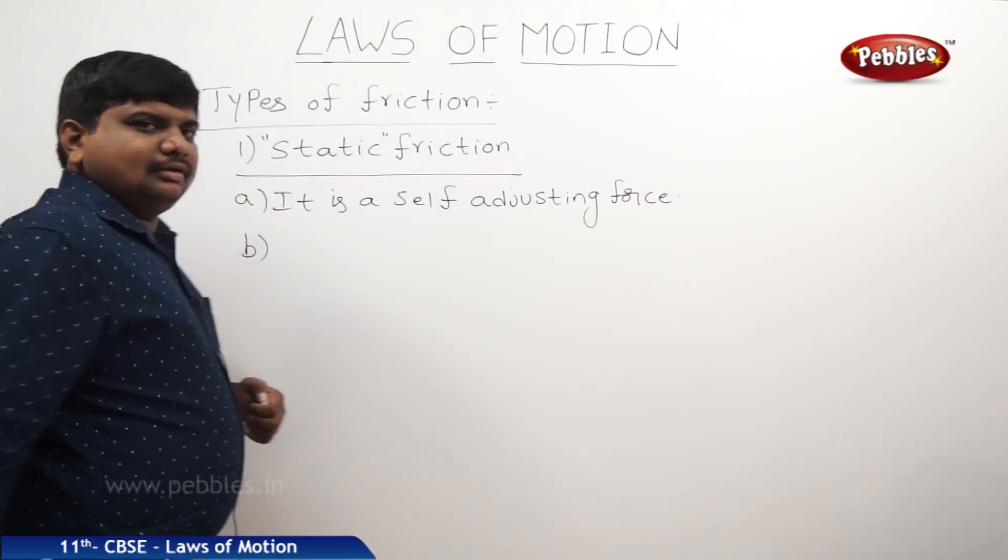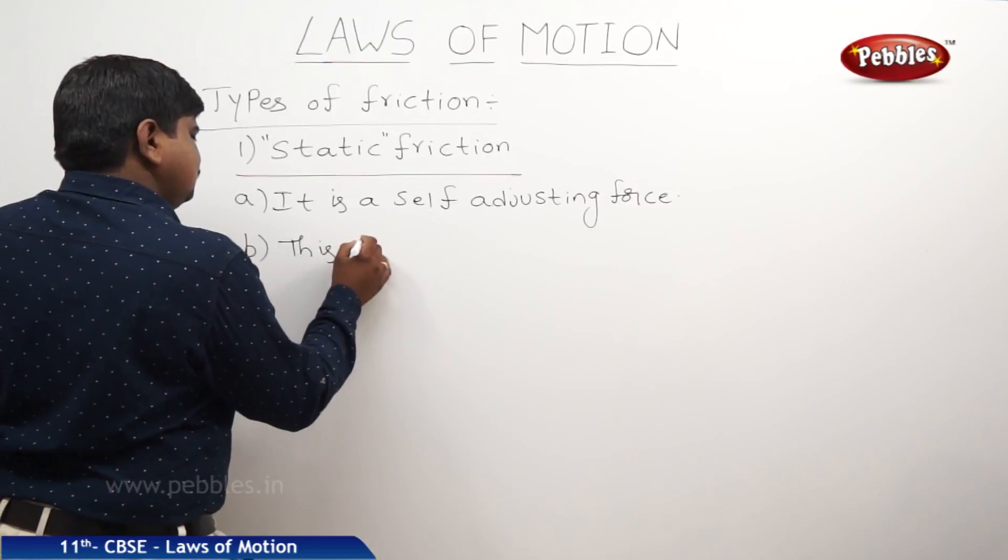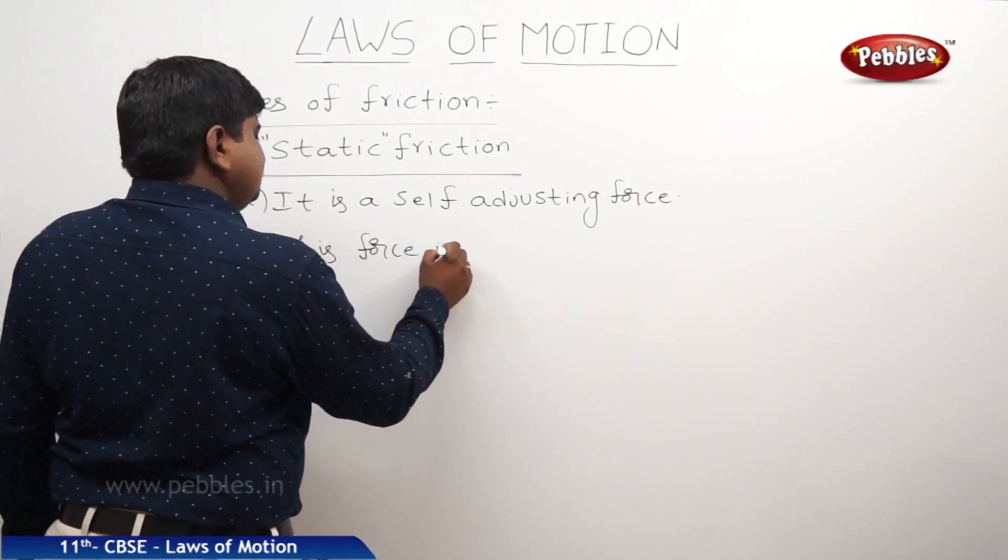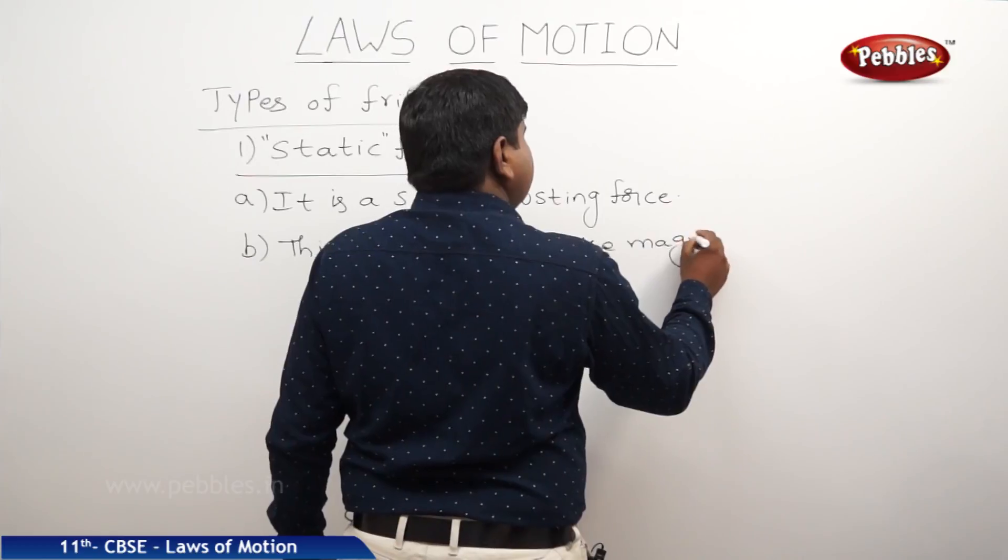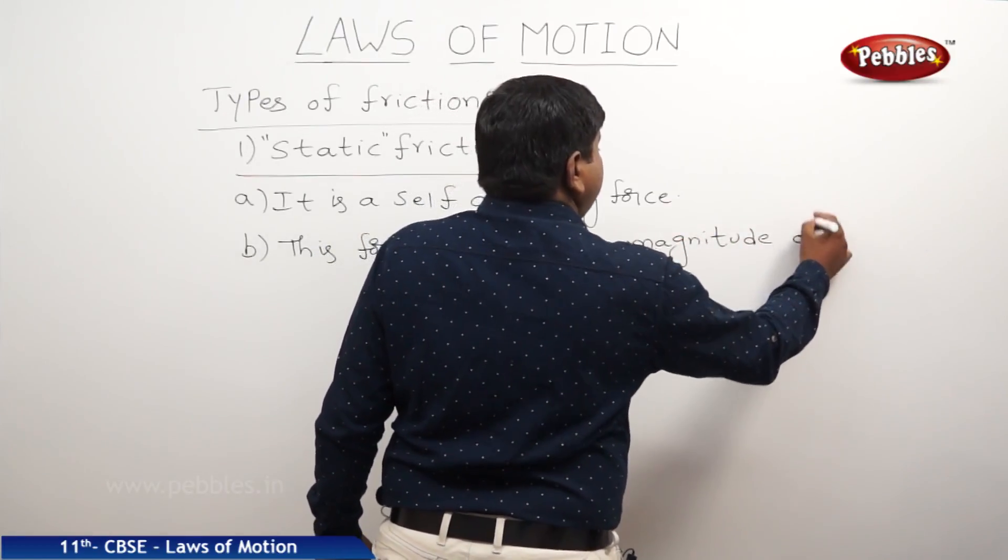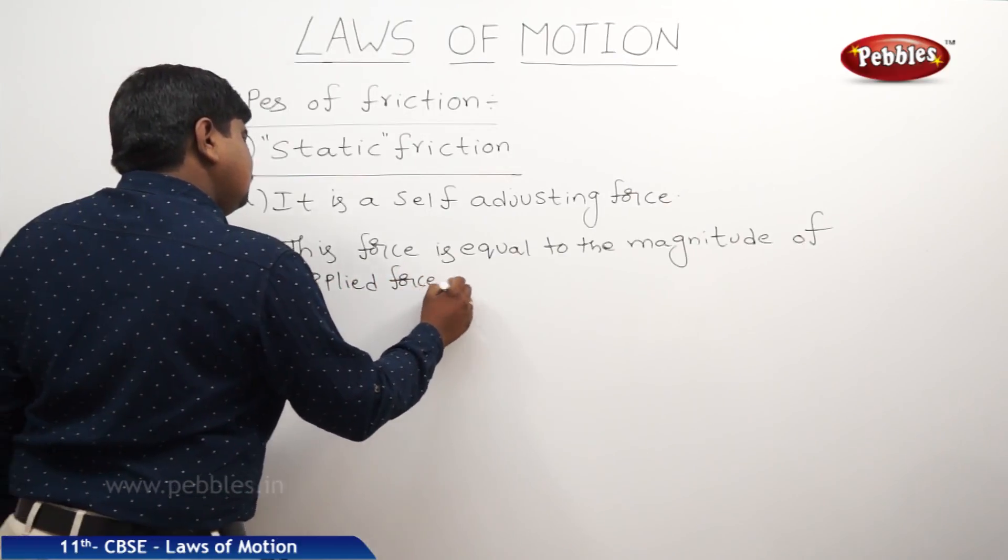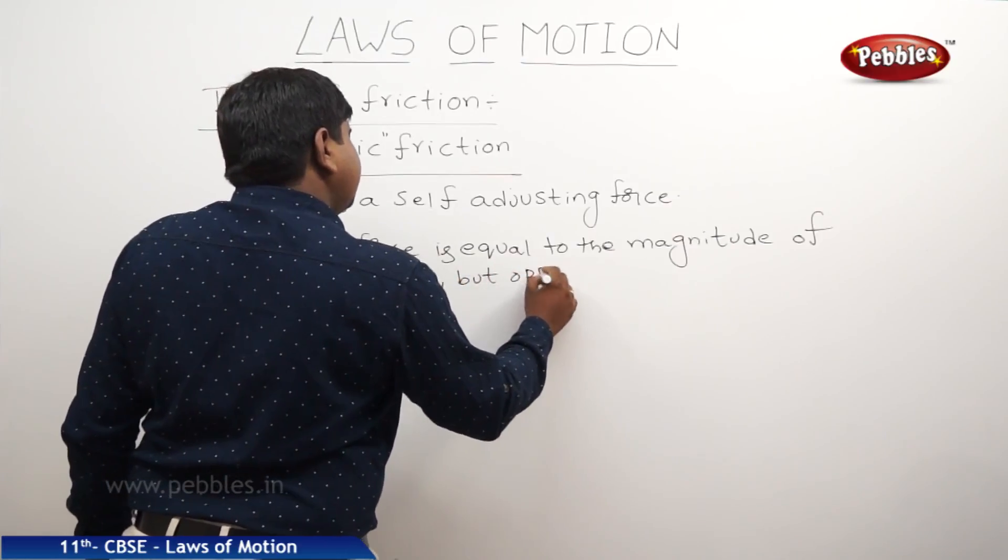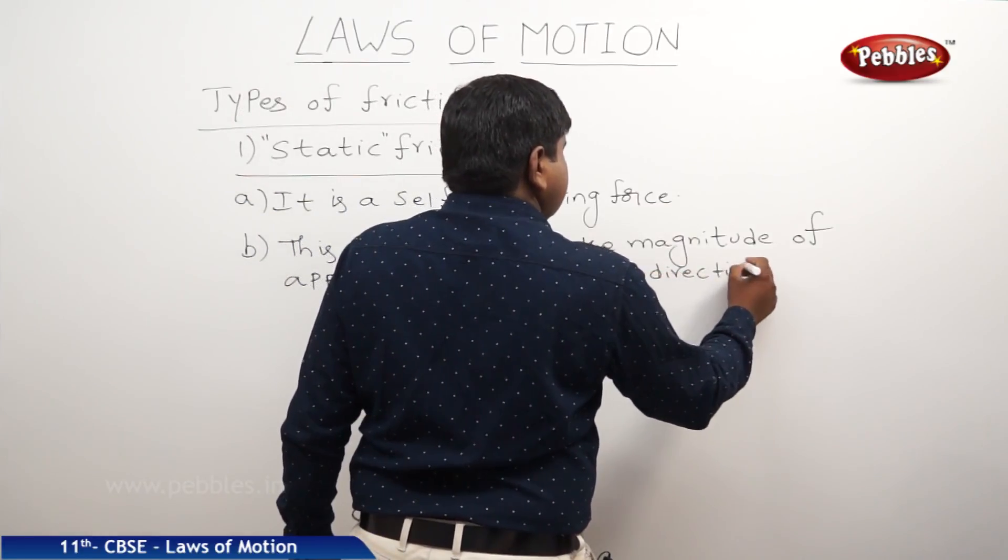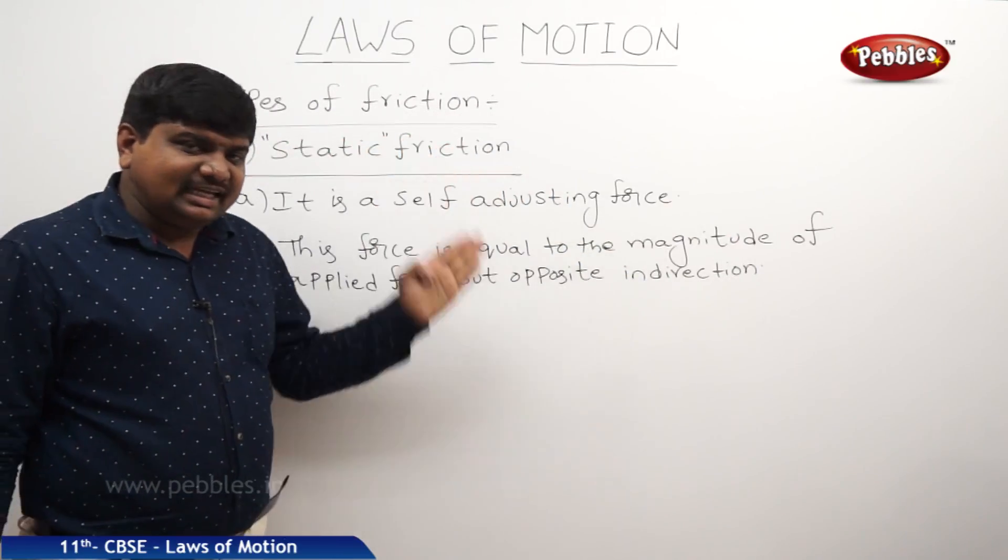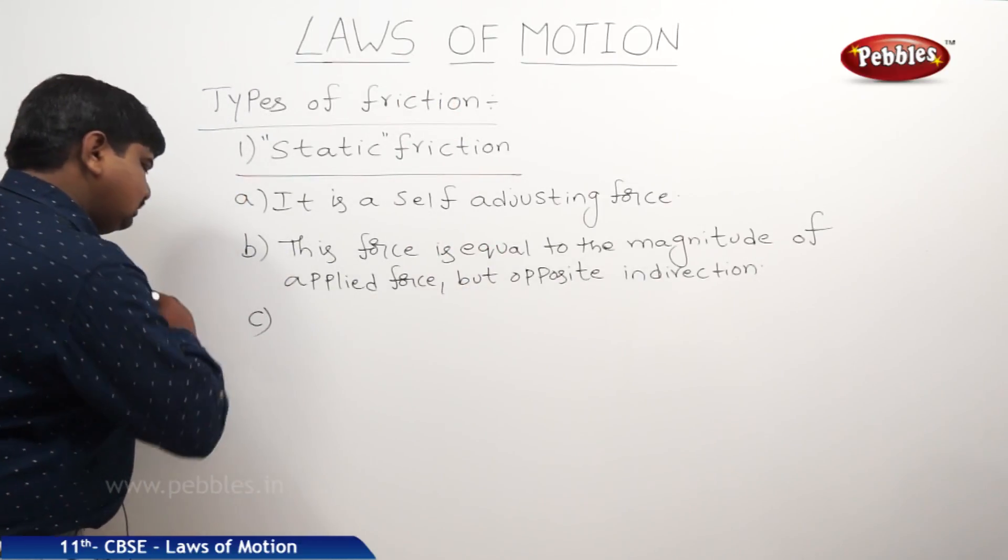Second one: This force is equal in magnitude to the applied force but opposite in direction. So from the second law we can say that this frictional force is almost an example or consequence of Newton's third law of motion.